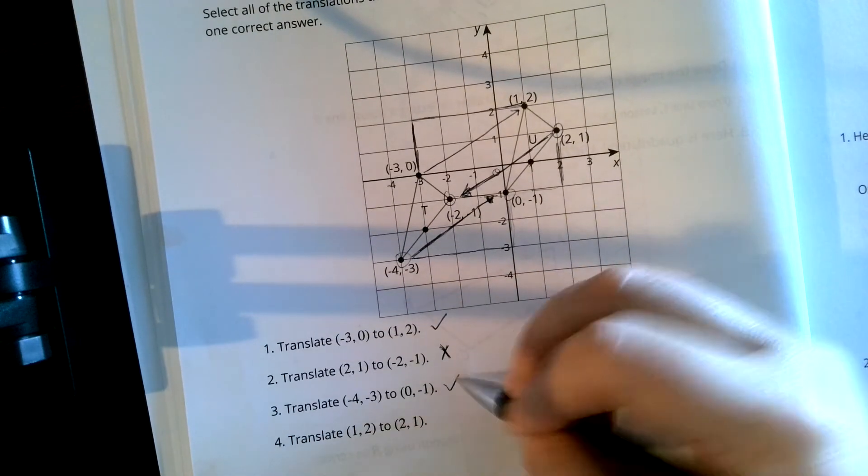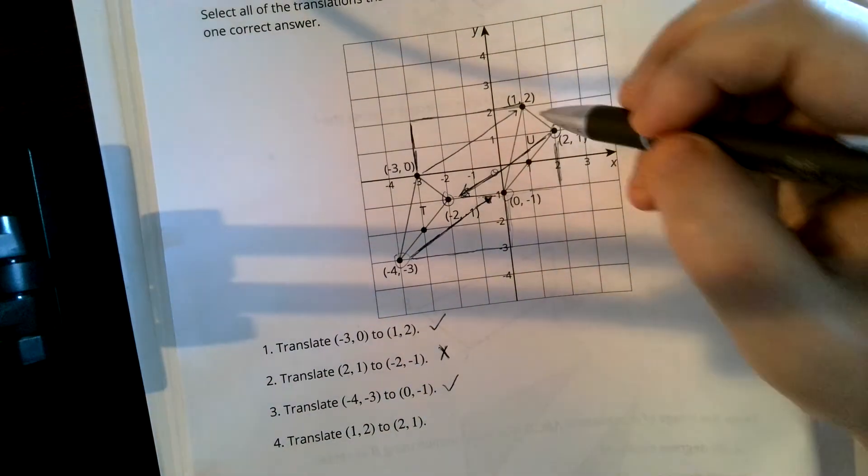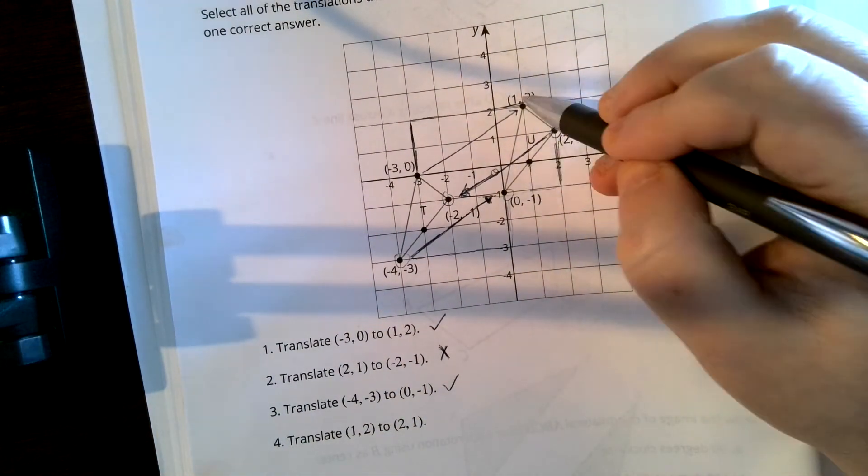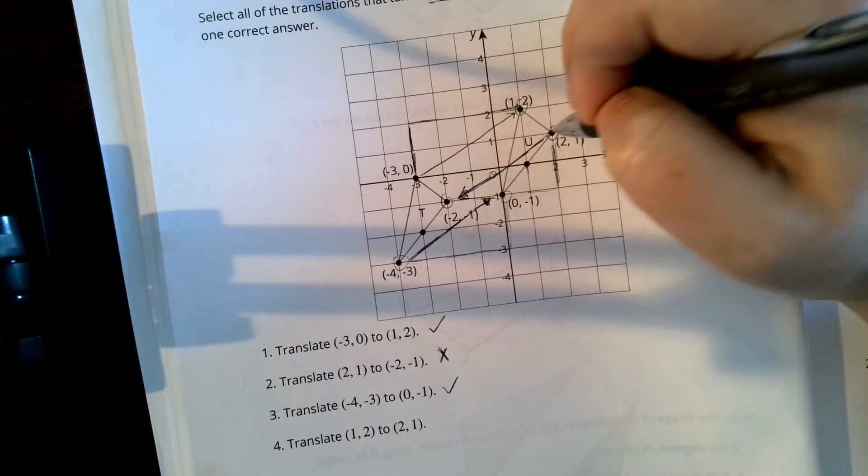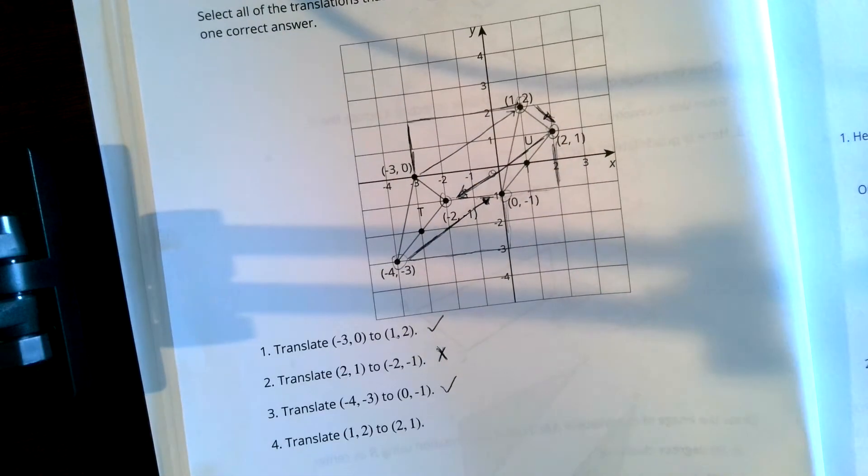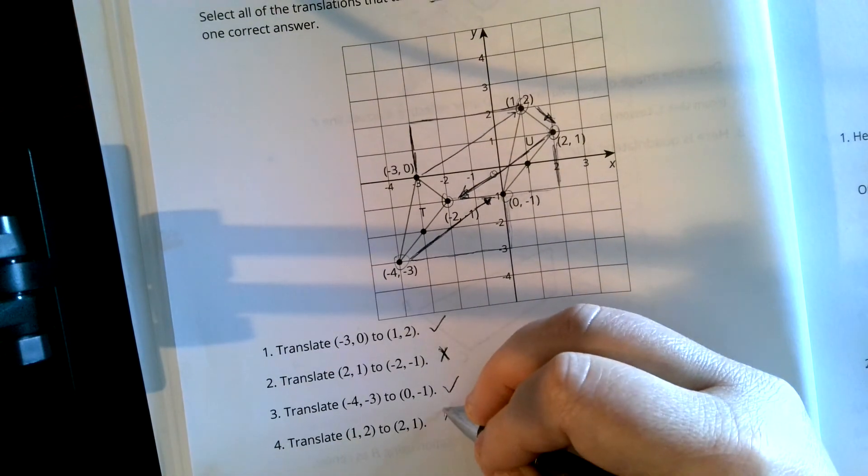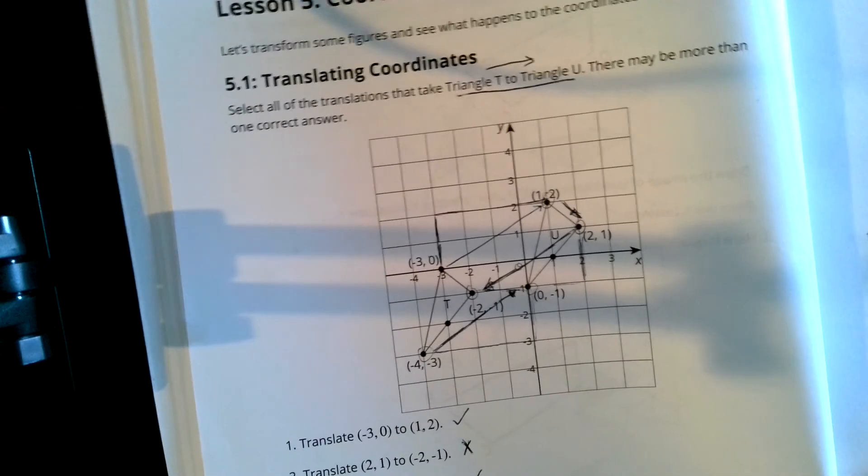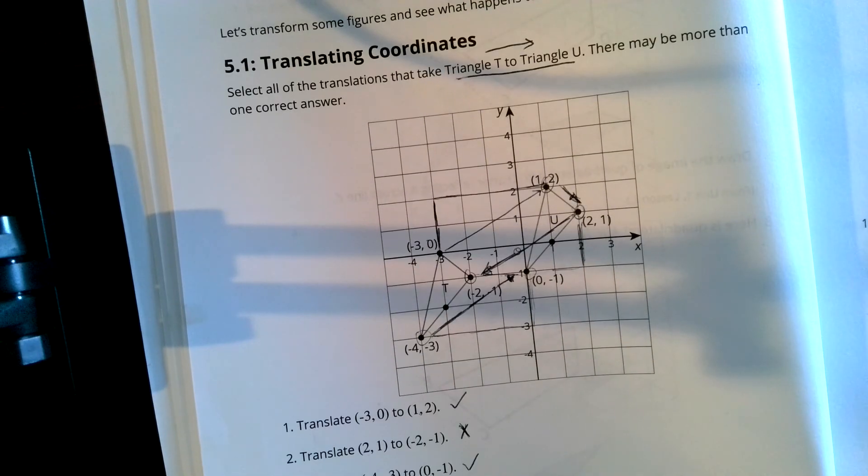And the last one is talking about (1, 2), which is here, moving to (2, 1), which is here. And that is definitely not a translation. That one is definitely not. All right, so that is your warm-up for today.